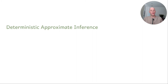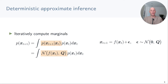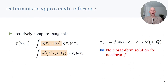Now let's first look at deterministic approximate inference. Here we iteratively compute the state distribution of the next state at time t plus one, which is the integral of the next state distribution given the current state at time t — shown in orange — times the state distribution at the current state, and we integrate out the current state. In our case we assume additive Gaussian noise in the dynamics so that the orange conditional distribution is Gaussian with mean f of x_t and covariance matrix Q.